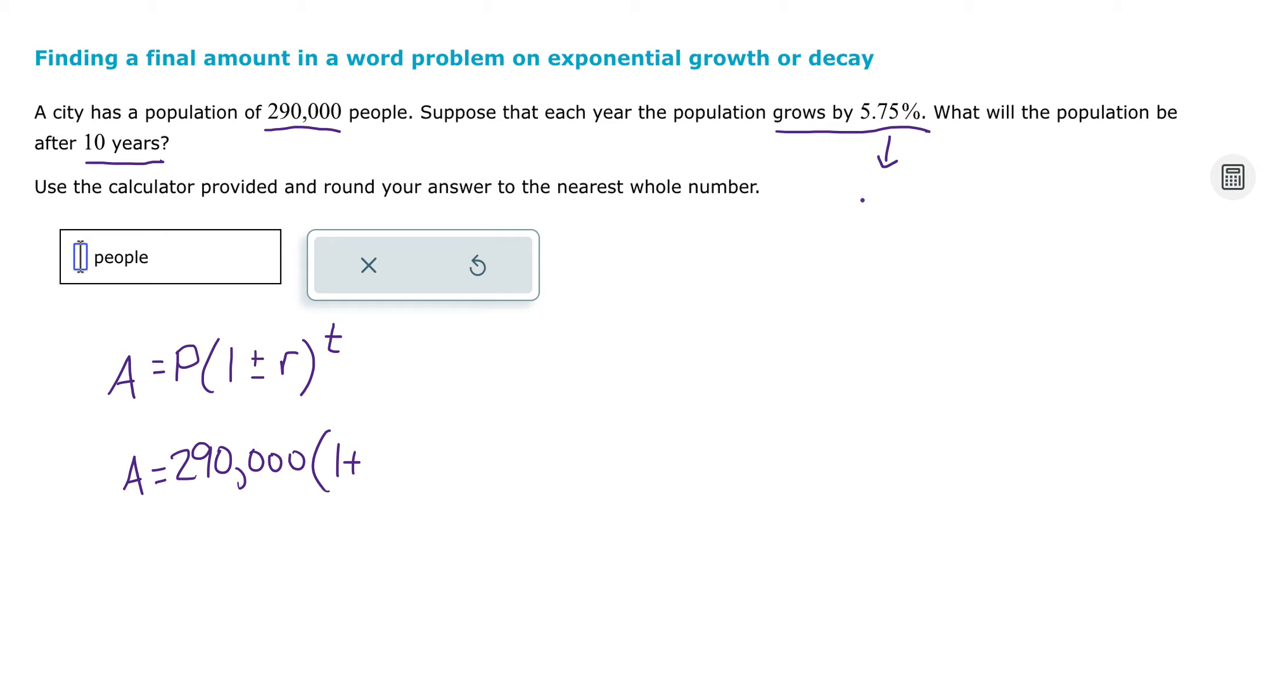Now for my rate, my R, I'm going to convert a percent to a decimal. So 5.75% is 0.0575. You can get that by dividing, percent means per hundred. So divide by 100 to get that as a decimal. So 0.0575 for R.